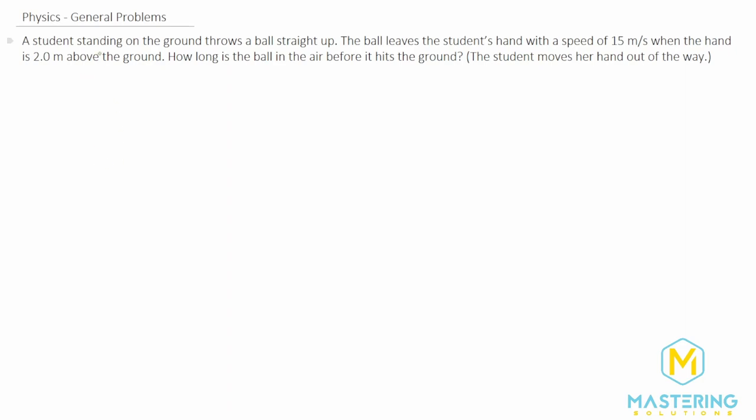When we draw a picture of this, it's really helpful. The student starts with the ball two meters above the ground, and then the ball gets thrown up. The initial velocity here, we're not sure what it is, but we do know that the final velocity for this half of the ball in the air is zero meters per second.